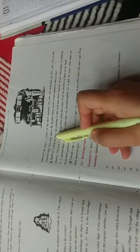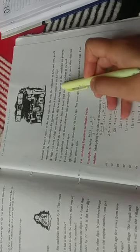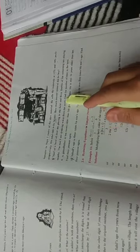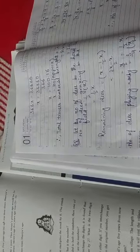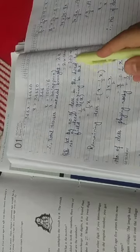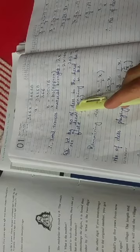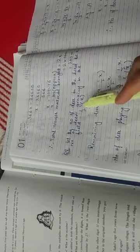Now question number 8 is: half of the herd of deer are grazing in the field, and 3/4th of the remaining are playing nearby. The rest are drinking water from the pond. Find the number of deer in the herd. There is a group of deer. Let the number of deer in the herd be x total.